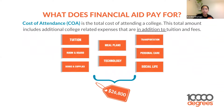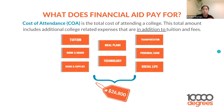Let's talk about what financial aid actually pays for. Most importantly, it's the cost of attendance — the total cost to attend your college. This amount includes additional college-related expenses beyond tuition and fees. Some things that get overlooked include room and board, books and supplies, meal plans, technology, transportation, personal care, and social life.